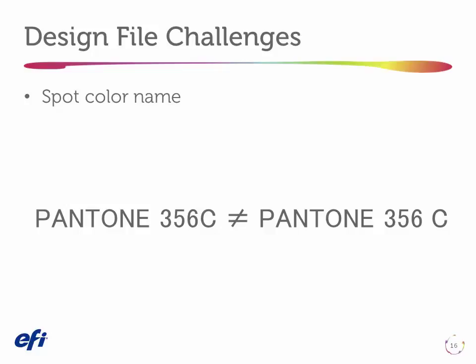There are three problems in the world of digital production of spot colors related to design files. The first is simple but easy to miss: if the spot color in the design file is not named precisely the way it's named in the DFE spot color table, you're not going to get a match. For example, if I create a color in Illustrator and type 'Pantone 356C' without the space between the number and the C that the spot color library expects, I've effectively misspelled it. That color, while it looks like a real Pantone color in the job, won't be looked up and color managed precisely — instead we get the alternate color definition that Illustrator or InDesign uses to simulate the color, which won't give a precise match on your particular press, paper, and print settings.